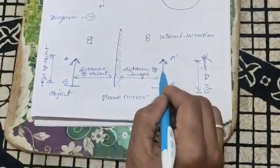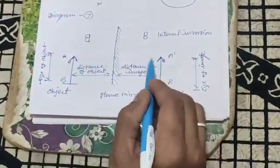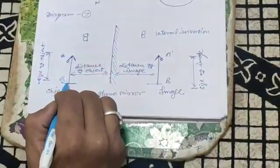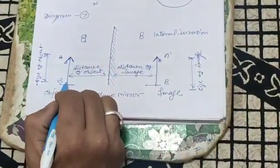Length of image or the height of image will be just equal to the height of the object.